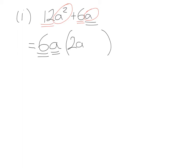Now this next bit causes some confusion. We have 6a on the outside and a +6a term. Some people think they're done, but we need to show that term in the answer. So we ask: what do you multiply by 6a to get 6a? Well of course it's just the number 1. So the answer is 6a(2a + 1).